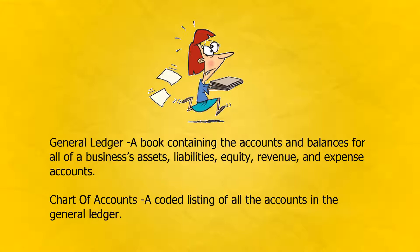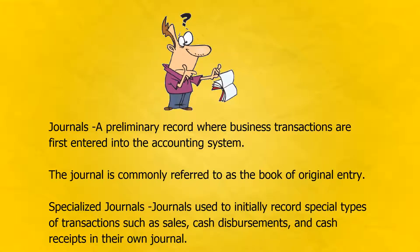Chart of Accounts: a coded listing of all the accounts in the General Ledger. Journals: a preliminary record where business transactions are first entered into the accounting system.